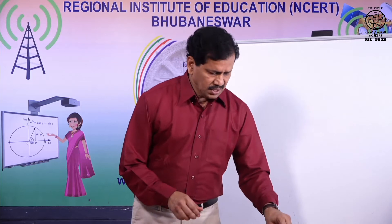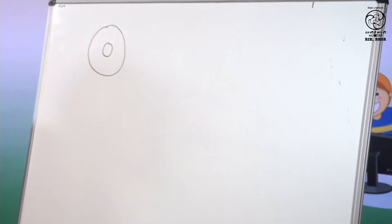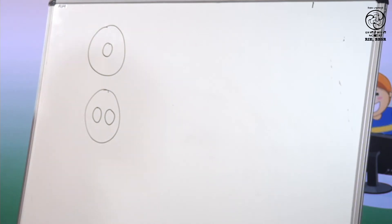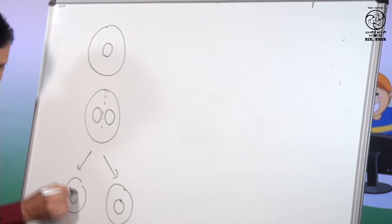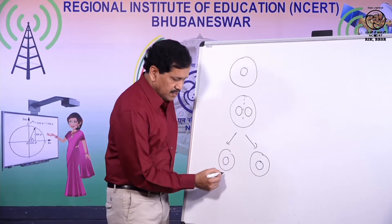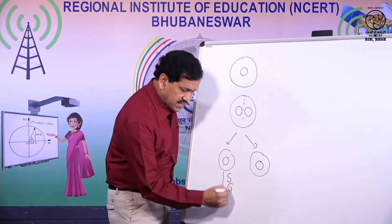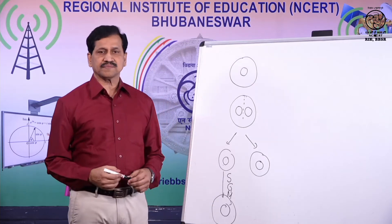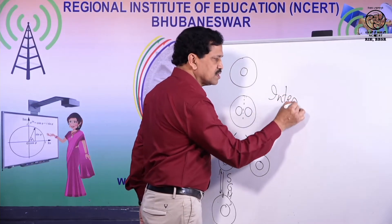Before going to that, let me tell you: when a cell divides, the nucleus first divides to form two daughter nuclei, which is followed by the division of the cytoplasm, resulting in the formation of two daughter cells. These daughter cells do not divide immediately again. They enter into a period during which they synthesize various substances, grow in size, undergo maturation, and almost double in size before dividing again. This period between two successive divisions is called interphase.